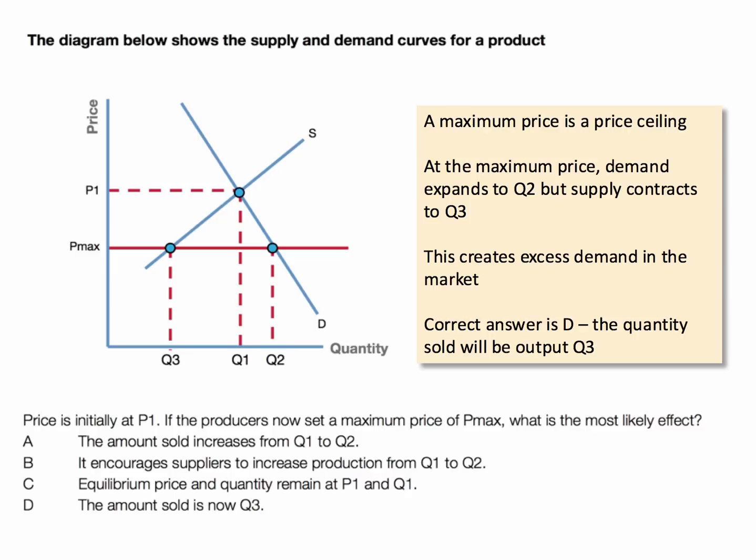The correct answer is that the amount sold is now Q3. Working through the options: A is wrong — the amount sold won't increase because producers won't supply Q2. Demand is Q2, but suppliers will not supply that. B is wrong — it does not encourage producers to increase production. In fact, the reverse: the maximum price can discourage supply, taking supply down from Q1 to Q3.